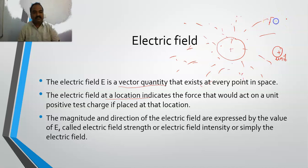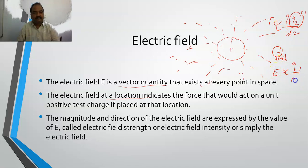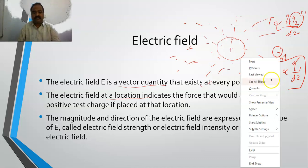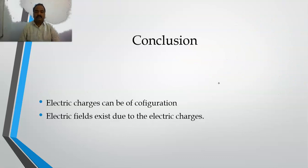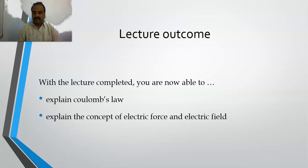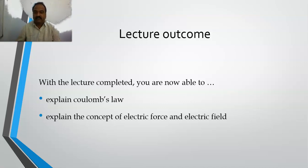In the equation F equals Q1 Q2 by R squared, if I make the second charge a unit positive charge, then F divided by Q gives the electric field intensity of this particular charge. It is often referred to as electric field strength, and also sometimes as electric field intensity. We have seen that charges can be of different configurations and electric fields exist due to electric charges. I hope now you can easily explain the concept of electrostatic force and electrostatic field.